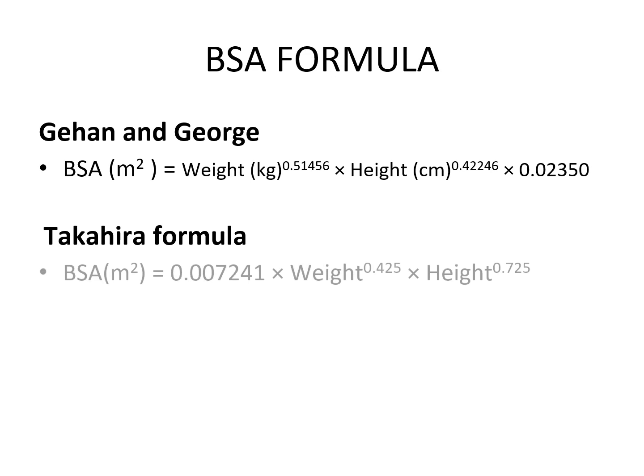For Takahira formula, BSA is expressed as 0.007241 multiplied by weight raised to the power of 0.425 and height raised to the power of 0.725. Remember, for weight and height, we are using kilograms and centimeters respectively.